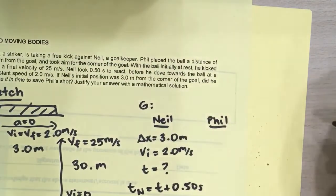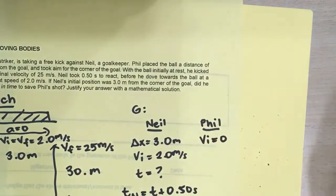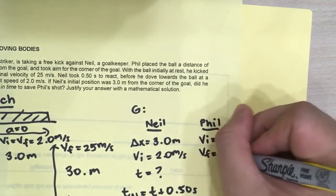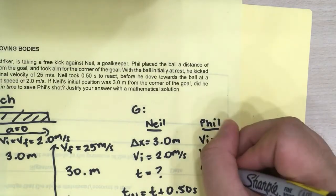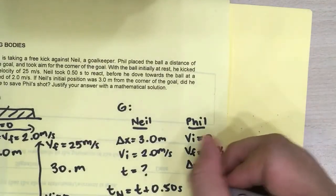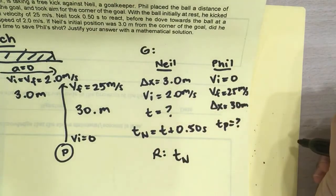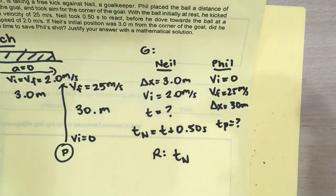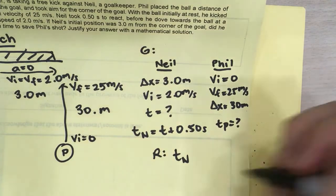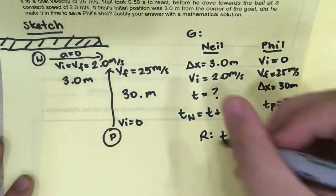Furthermore, let's go to Phil. So for Phil, we have a VI of 0. We have a VF of 25 meters per second. We know that the delta X is 30 meters. And we're now looking for the time of Phil. And this is what we're going to compare. We are required to see if Neil makes it to save the shot. So if the goalkeeper saves the shot, he should be able to make it to the corner of the goal before the ball does. So the time of Neil must be less than Phil in order to prove that it works.